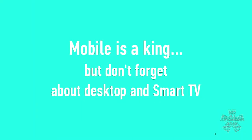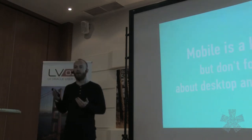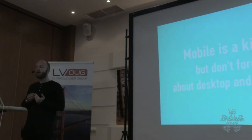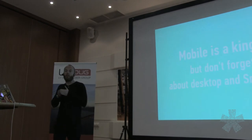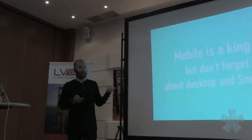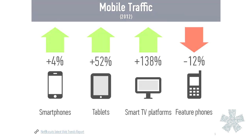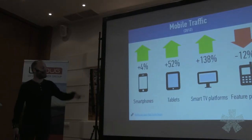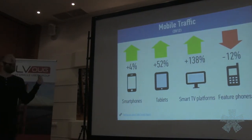Right now we already know that mobile is king. We should care about mobile phones and tablets because their usage is growing every day. But we shouldn't forget about desktop right now, because desktop is still the main user context. And smart TVs as well — smart TV platforms are growing probably more than 100% each year.